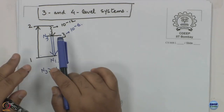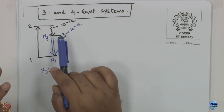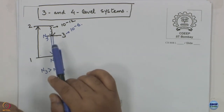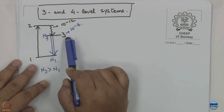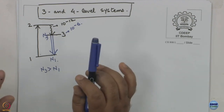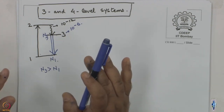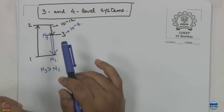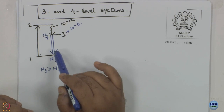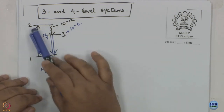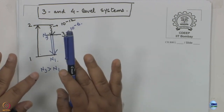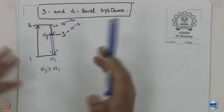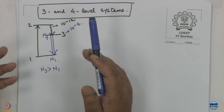That brings us to something very relevant: pulsed lasers. Initially at time zero, population of level 3 is zero and population of level 1 is essentially total. After 1 nanosecond of pumping light shining, N3 is building up but perhaps hasn't reached population inversion. So for the first nanosecond there is no lasing, and perhaps for 2 nanoseconds also there is no lasing.